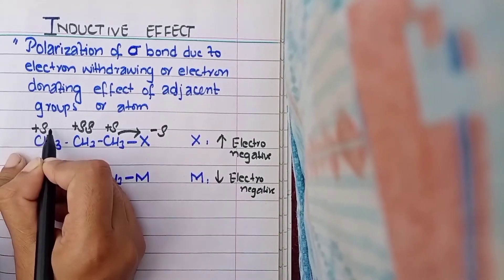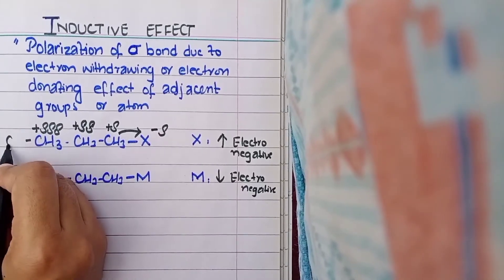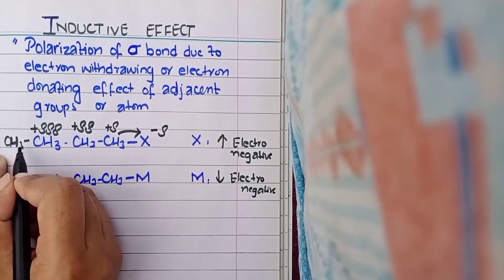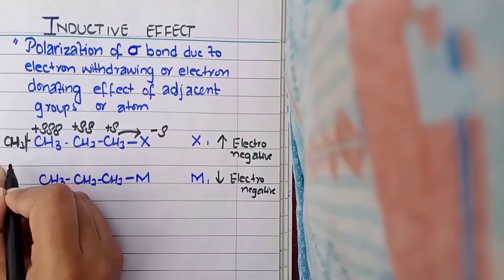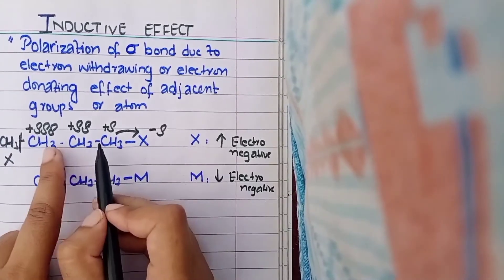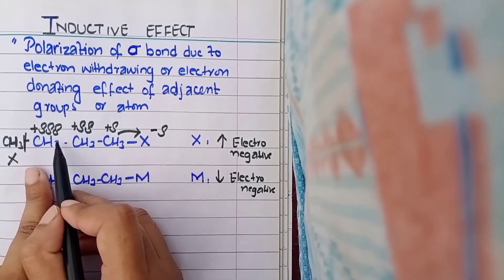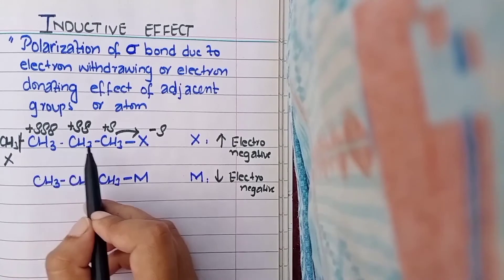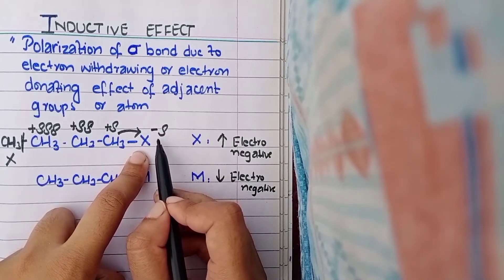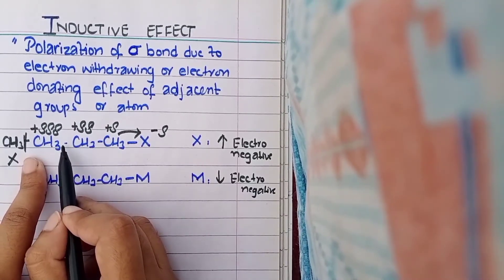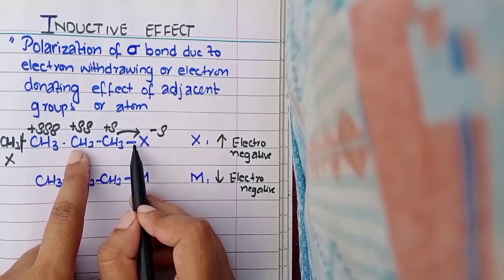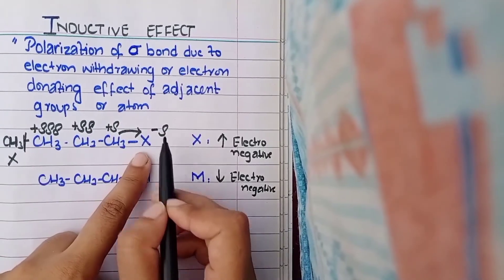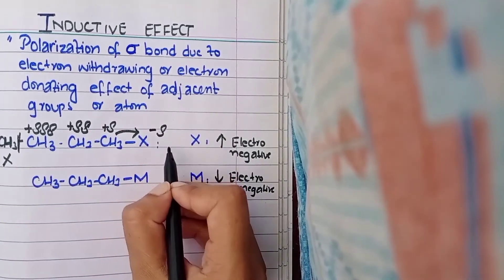The third CH3 is also affected and will have an even smaller partial positive charge. However, if there is another CH3 beyond three carbons, it will get no charge at all — the inductive effect fades and is only applicable up to three carbons. So we can see that these sigma bonds are polarized, making the whole compound a dipole — X is partially negative and the chain is partially positive. This is called polarization of the sigma bond.